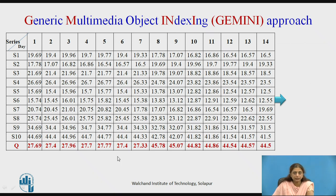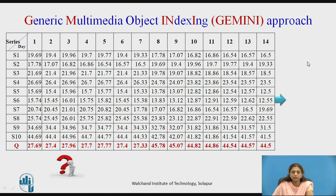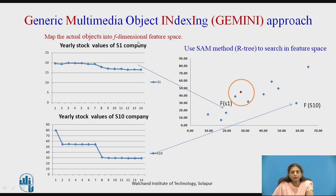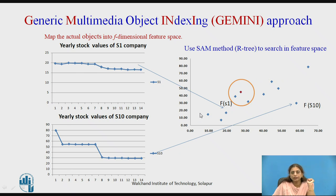In the example, we have 10 companies and a query object with 14 values each. Pause and try to compute two features: the average of the first half and the average of the second half. These two features, f1 and f2, are found for all series. All 10 companies are mapped to points in 2D feature space and stored in the R-tree. Each series of 14 values becomes a single 2D point, and all 10 companies are plotted as 10 points.